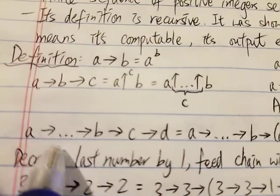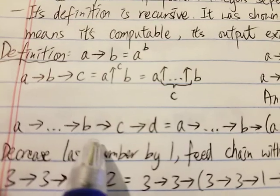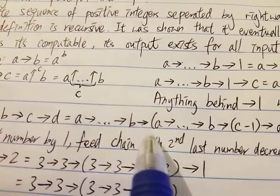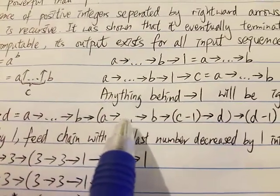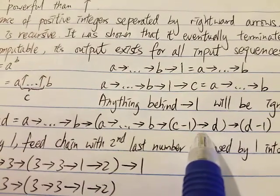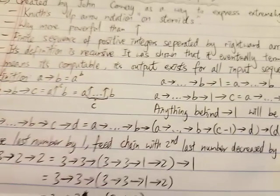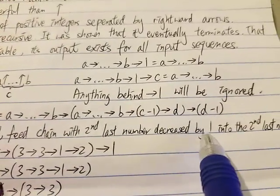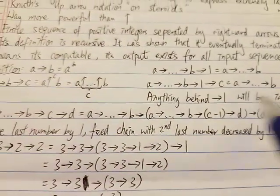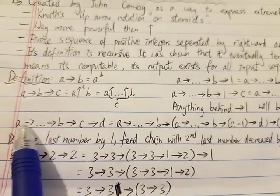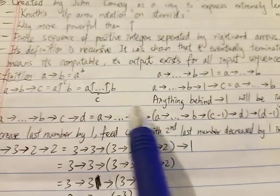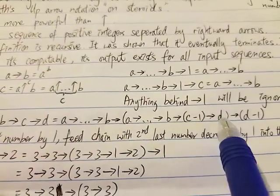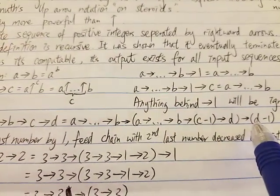The last case is A→...→B→C→D. This means A→...→B→(A→...→B→(C−1)→D)→(D−1). So basically you are decreasing the last number by one, and then fitting in the whole chain with the second-to-last number decreased by one. This whole thing becomes the same chain but with C replaced by C−1, and D replaced by D−1 at the end.